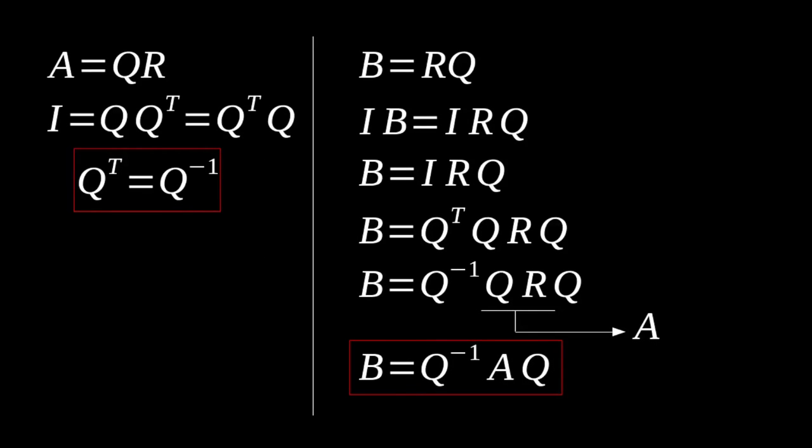If we go back here and write to everything that we've done, and we go all the way back up to the top of this derivation, one such way that we can compute a similar matrix for some given A matrix is we can just compute a QR matrix decomposition, flip the Q and the R around, compute the product RQ, set that equal to some new matrix variable. That new matrix variable, in this case B, will be our similar matrix to A.